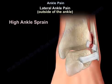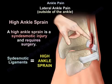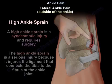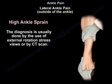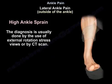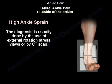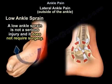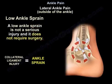A high ankle sprain is a syndesmotic injury that requires surgery. It is a serious injury because it injures the ligament that connects the tibia to the fibula at the ankle joint. Diagnosis is usually made by external rotation stress view or by CT scan.